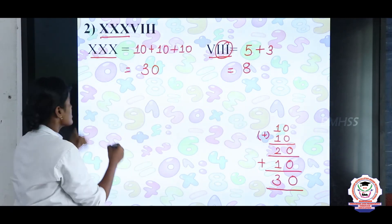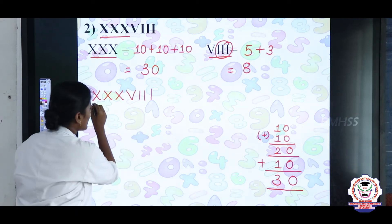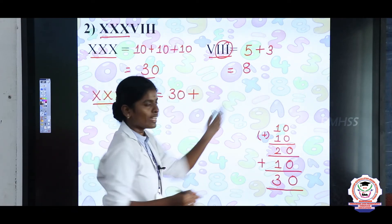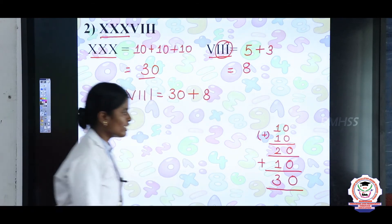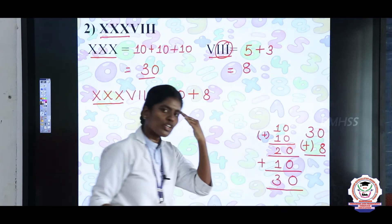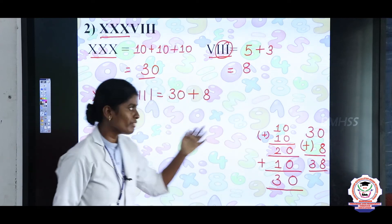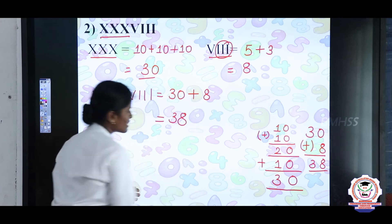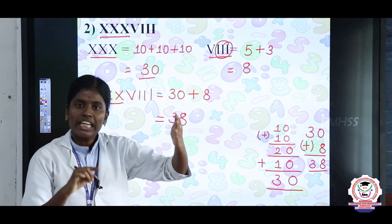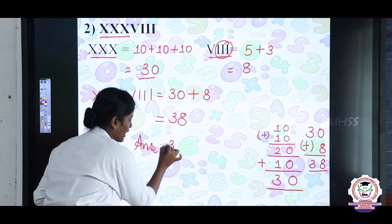So the Roman numeral XXXVIII equals 38. The Hindu-Arabic numeral for XXXVIII is 38. Write the answer: 38.